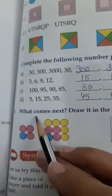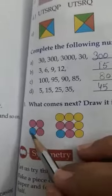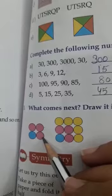See there now third part. What comes next, draw it in the box. See there students, there are 2 lines. In first line, 2 circles given, second line, 2 circles given.